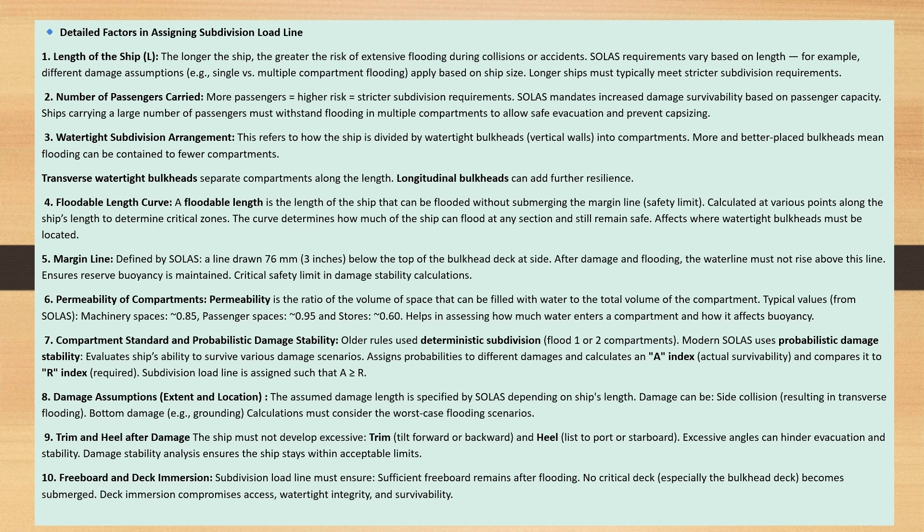Factor 4: Floodable Length Curve. The floodable length is the length of the ship that can be flooded without submerging the margin line. It is calculated at various points along the ship's length to determine critical zones. The curve determines how much of the ship can flood at any section and still remain safe, and affects where watertight bulkheads must be located.